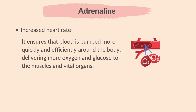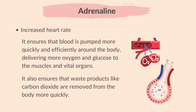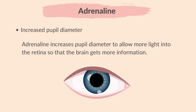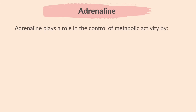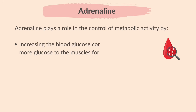The heart rate also increases for the same reason — it ensures that blood is pumped more quickly and efficiently around the body, delivering more oxygen and glucose to the muscles and vital organs, and ensuring that waste products like carbon dioxide are removed more quickly. Adrenaline also increases pupil diameter to allow more light into the retina so that the brain gets more information, helping to increase visual awareness and alertness.